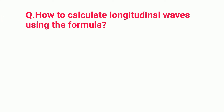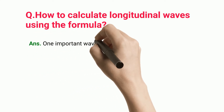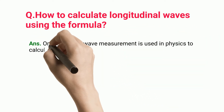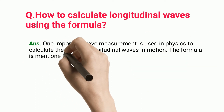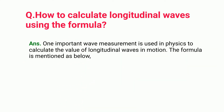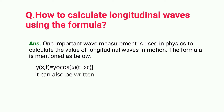How to calculate longitudinal waves using the formula? One important wave measurement used in physics to calculate the value of longitudinal waves in motion is the formula: Y(X, T) = Y₀ cos(T - X/C). It can also be written in a simple manner as: Y(X, T) = Y₀ cos(ωT - X/C).